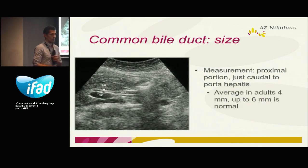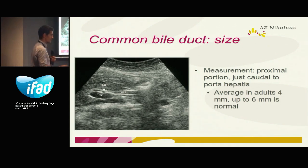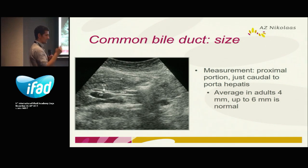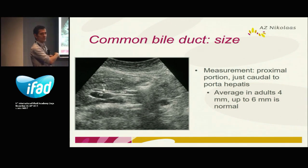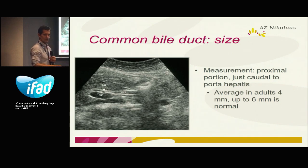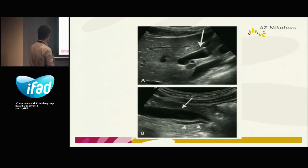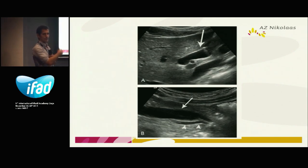Let's go to the common bile duct and bile duct dilatation. You have a patient on the ICU with hyperbilirubinemia — the first thing you want to know is whether the bile ducts are dilated. This is the portal vein, and next to it runs the common bile duct. Normally if there's no problem, you don't see the common bile duct because it's less than 5 millimeters — if you don't see it, it's probably not dilated.